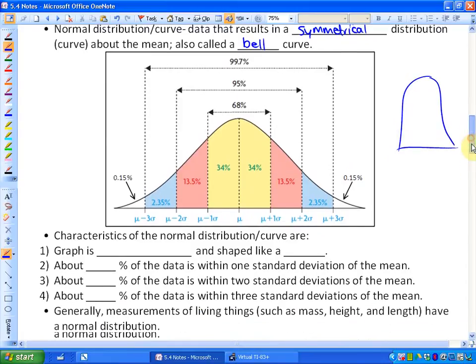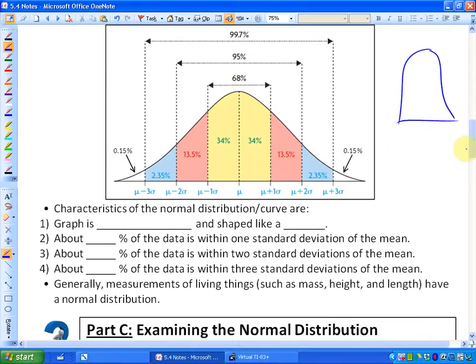meaning it's the same on both sides of the mean, symmetrical distribution curve about the mean. It's also called, in a lot of cases, a bell curve, because it kind of looks like the shape of a bell. Here are some characteristics of normal distribution. So for things that are normally distributed, which is almost everything in statistics, here are some characteristics. Characteristic one, which we've already seen, is that the graph is symmetrical